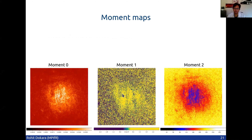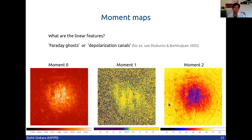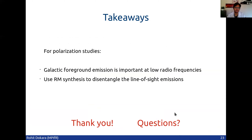Placing them all together, you can see that in the moment zero map there are some linear features which have less polarized intensity than their surroundings — we can call them depolarized. The moment two map tells you that the variance is high, meaning there are many structures at different Faraday depths giving rise to these depolarized emissions. These are known as Faraday ghosts or depolarization canals. This occurs because there are multiple ionized clumps, each rotating the polarization vector in its own way, and when you add them all up they can get depolarized. The takeaway is that if you are looking at polarization, you need to take care of galactic foreground emission, especially at low radio frequencies.